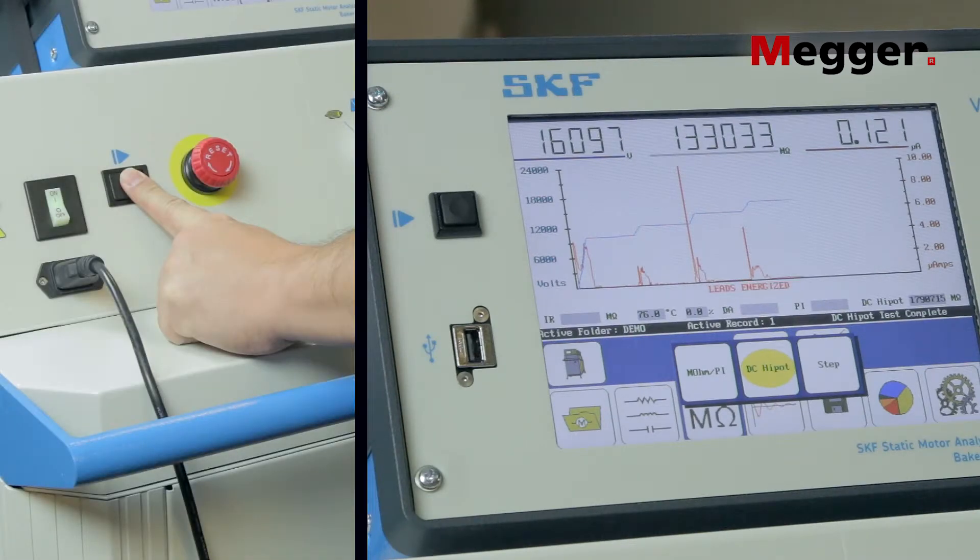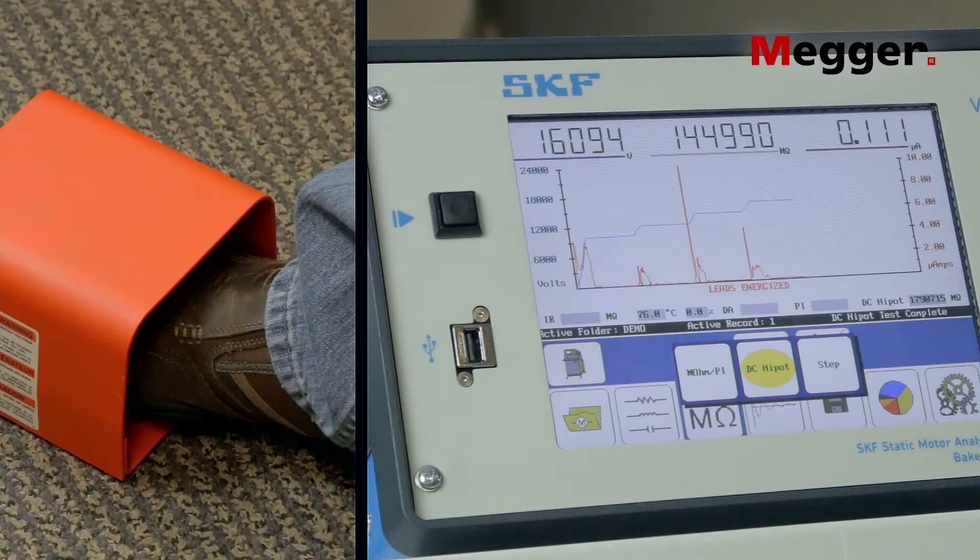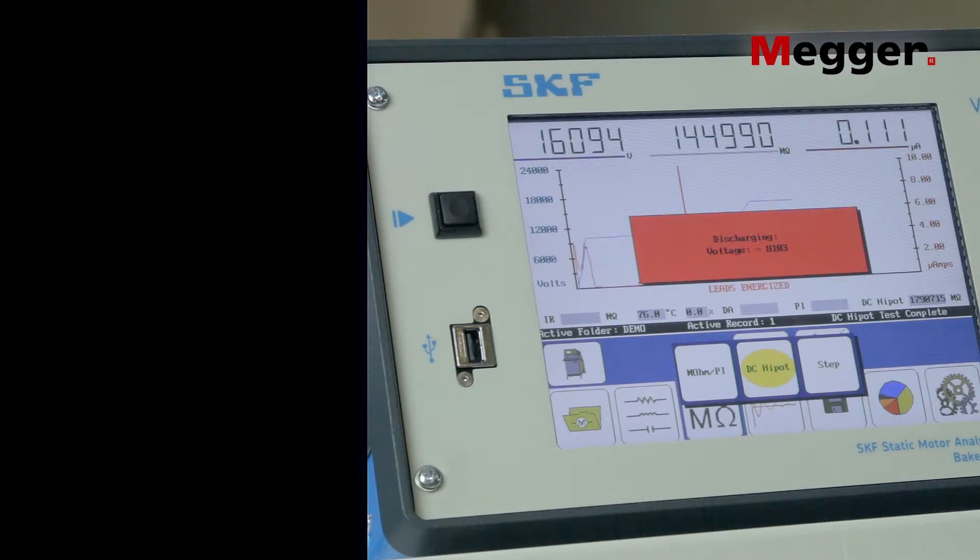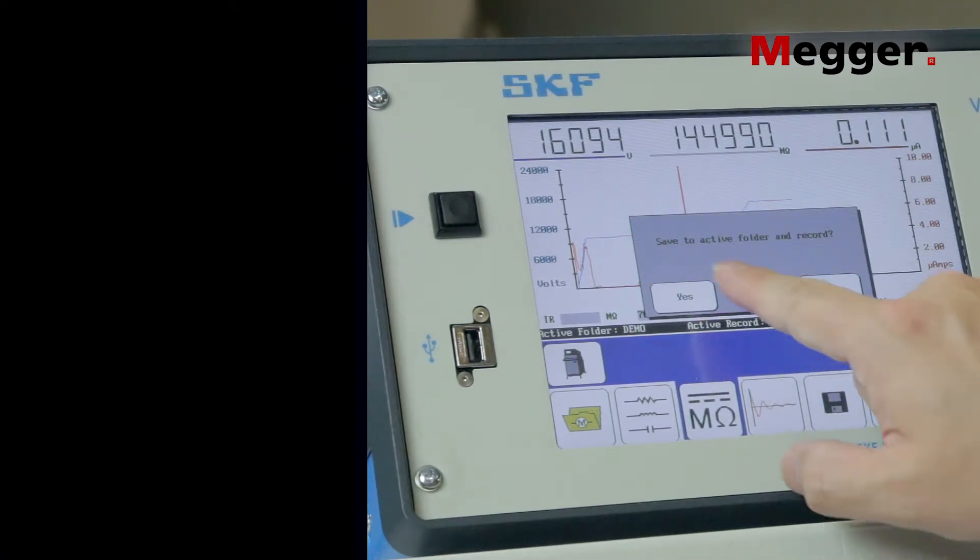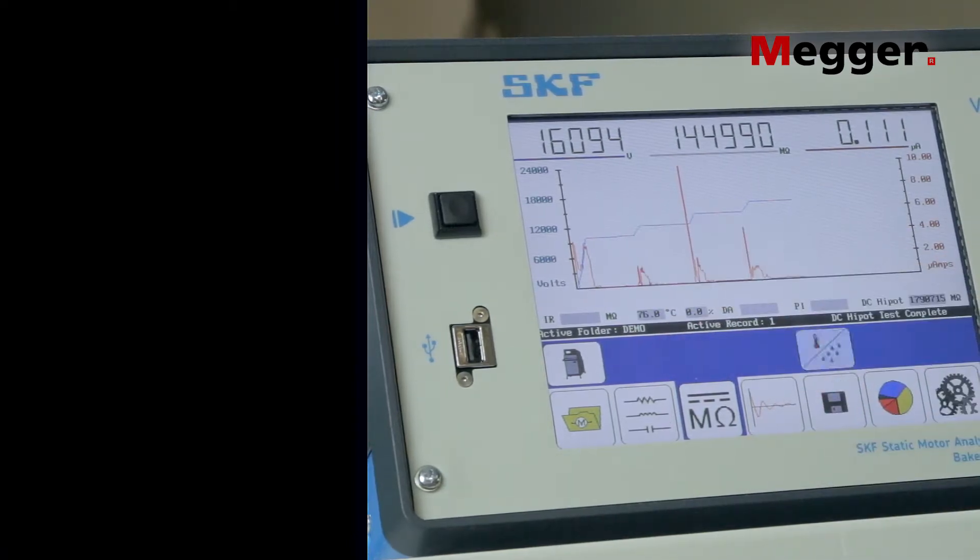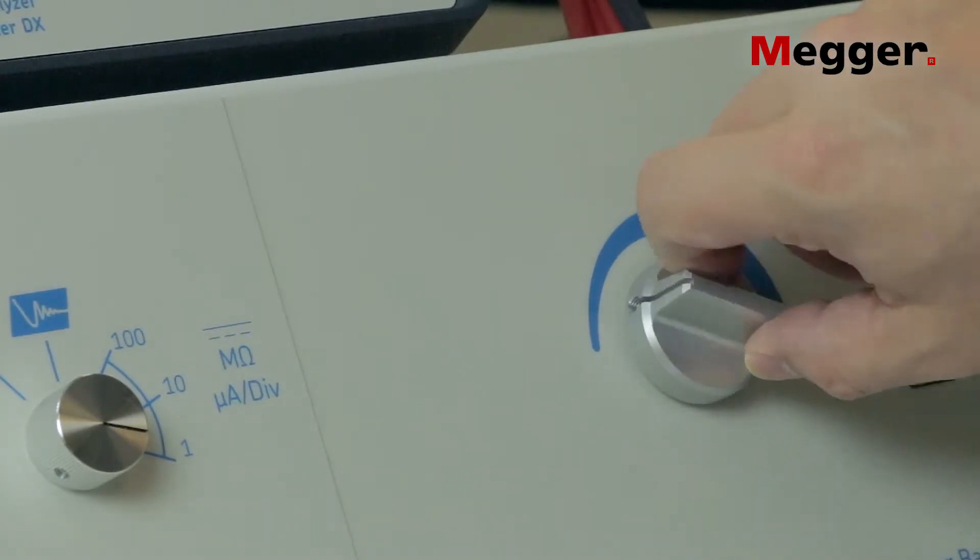When the HIPOT test is complete, release the push-to-test button or the foot switch. Save the data. Return the voltage knob back to zero.